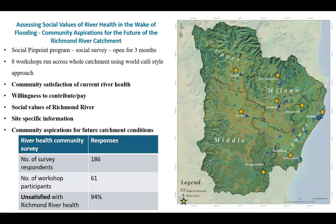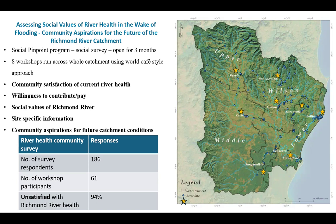We used a mixed method approach through a survey methodology created using an online platform called Social Pinpoint, which allowed us to embed surveys into a mapping software. We aimed to gather deeper understandings of the top six aspirations for river health using workshops across the catchment area. We broke the catchment into four sub-catchment regions. The yellow stars represent workshop locations distributed across the catchment, and the blue triangles represent the 186 survey responses across the total catchment area. We had 61 participants attend our workshops.